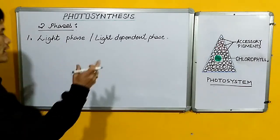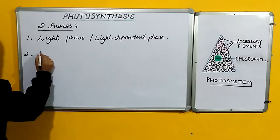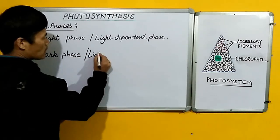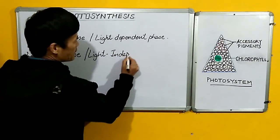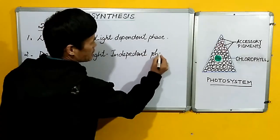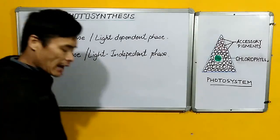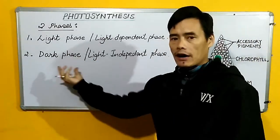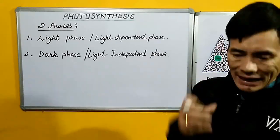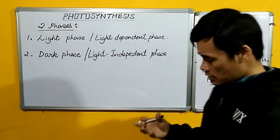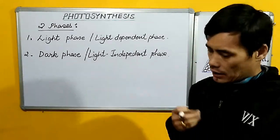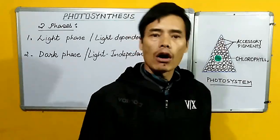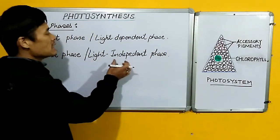The next phase is called the dark phase or light-independent phase. From the name itself we can understand that this phase is independent of light. It refers to the dark phase, but it literally does not mean that it takes place in the dark — it means it is independent of light. That is, this phase can take place in the presence of light or in the absence of light. Therefore, it is the light-independent phase.